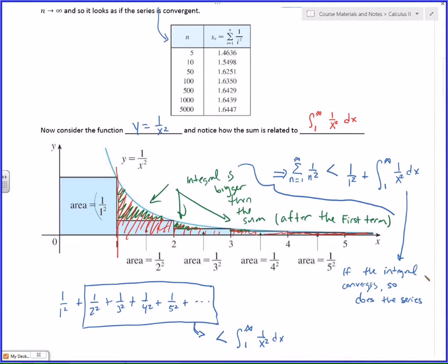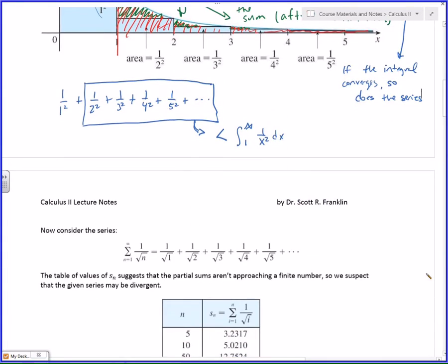Alright, so the next example. Consider this series right here. The sum from n equals 1 to infinity of 1 over the square root of n. Instead of 1 over n squared, let's look at a different series. Let's look at 1 over the square root of n. So, 1 over square root of 1 plus 1 over square root of 2 plus 1 over square root of 3 and so on.